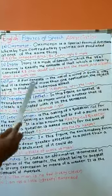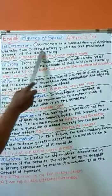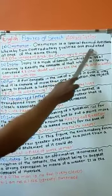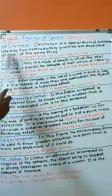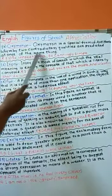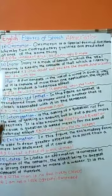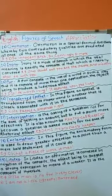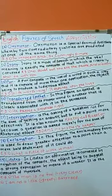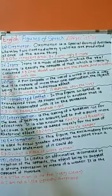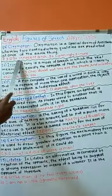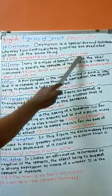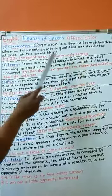whereby two contradictory qualities are predicted at once of the same thing. Here, two opposite ideas come together in the same sentence. For example, so innocent are, so cunningly simple.